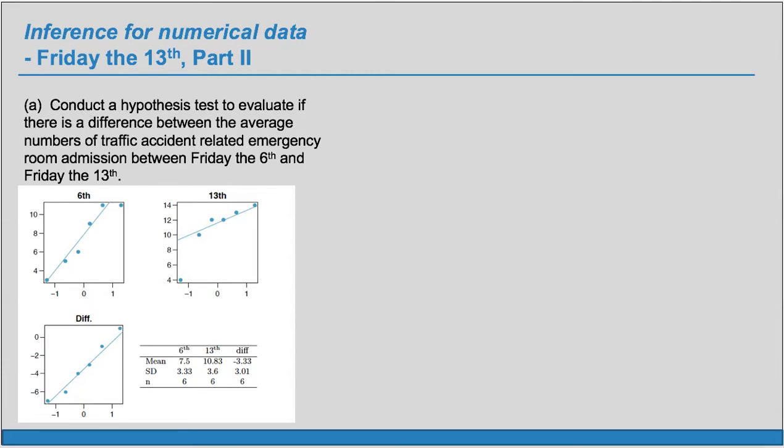Part A: Conduct a hypothesis test to evaluate if there is a difference between the average numbers of traffic accident-related emergency room admissions between Friday the 6th and Friday the 13th. First, we need to decide which type of hypothesis test to do. We seem to have two groups, the 6th and the 13th, but we also have the differences which makes us think it's going to be a matched pairs test. Are these data points really matched? Well, these data points correspond to specific years. In a particular year, I have the data for Friday the 6th and the corresponding Friday the 13th. Same thing for another year and for another year. So these data points are essentially paired, and we will do a matched pairs t-test.